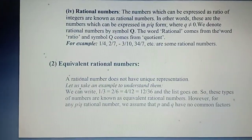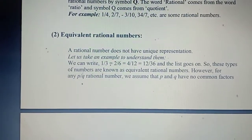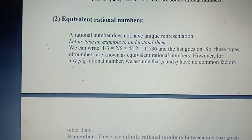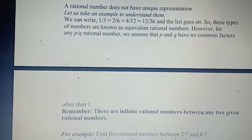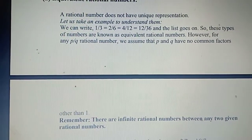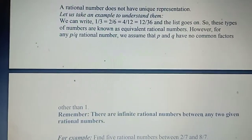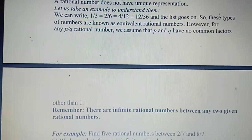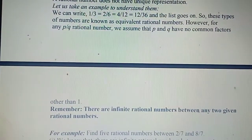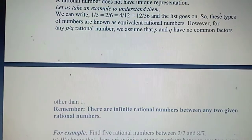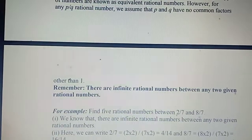Now here are some equivalent rational numbers. A rational number does not have a unique representation. For example, we can write 1/3 as 2/6, and 2/6 as 4/12. Similarly, 4/12 as 12/36, and the list goes on. These types of numbers are known as equivalent rational numbers. However, for any P/Q rational number, we assume that P and Q have no common factors other than 1.